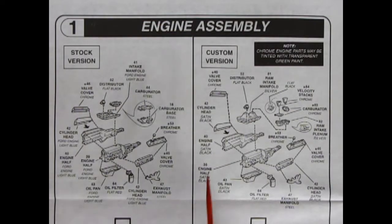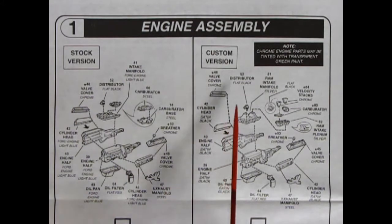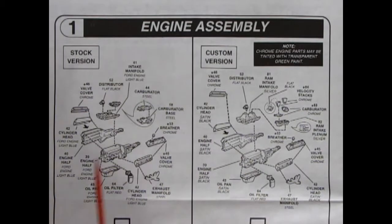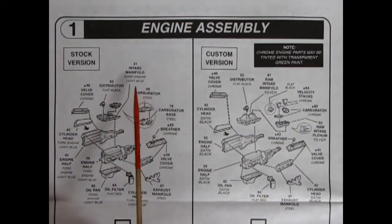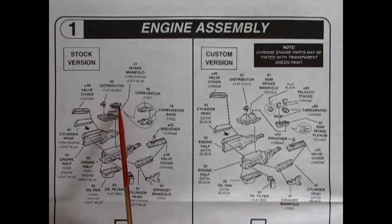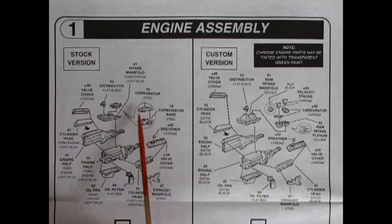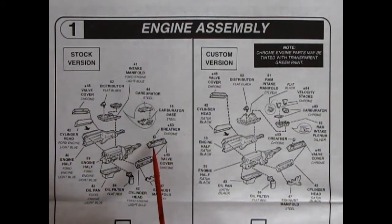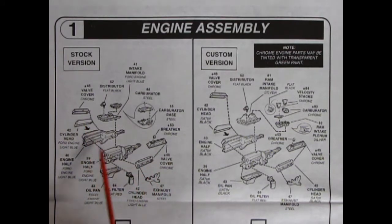Here we have our engine assembly. And of course, we get the stock version and the custom version. Keeping in mind that this is the big 428. The Cobra Jet bits, I believe. We've got our intake manifold. Our carburetor, which is two pieces. Which I think I'm going to have to replace with one out of the parts box. Since I'm missing part of it. Chrome valve covers. There's a breather on here, which is also chrome. Then we have our cylinder heads. Gluing onto this two-piece block with the transmission off the back. Then our oil pan and our oil filter. Distributor up there as well.